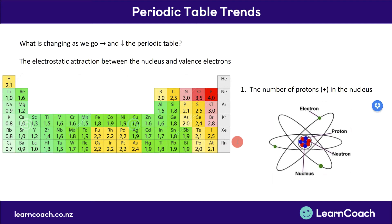The first thing that is changing is the number of protons in the nucleus. As we go along the periodic table and then down, the number of protons increases. More protons pulls the electrons in more tightly. As you know, positive and negative charges attract each other, so if you have more positive charges in the nucleus, it will pull the electrons tighter.